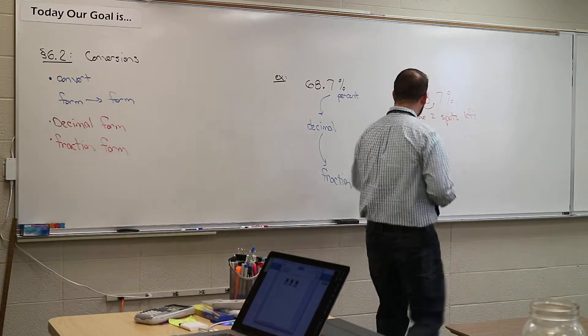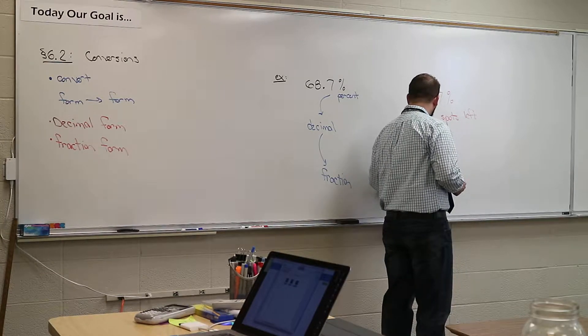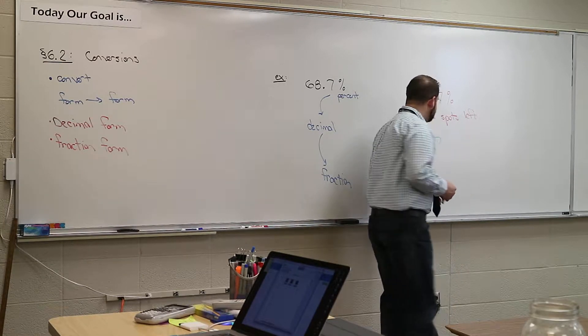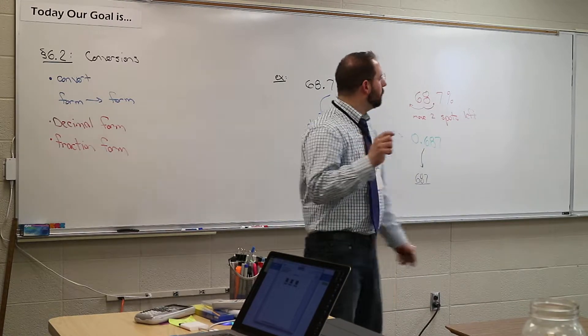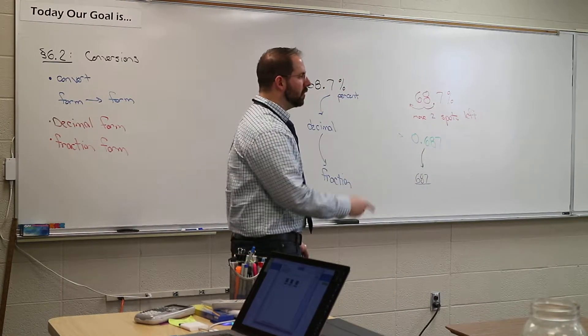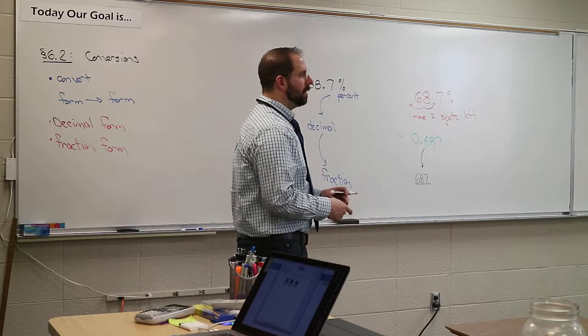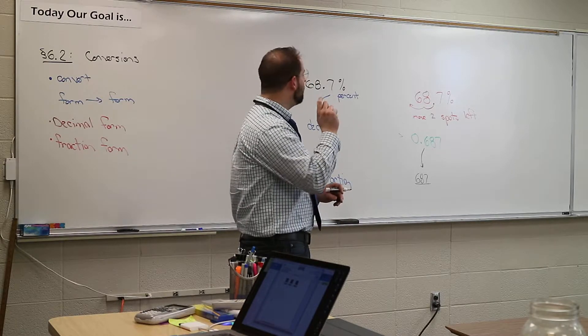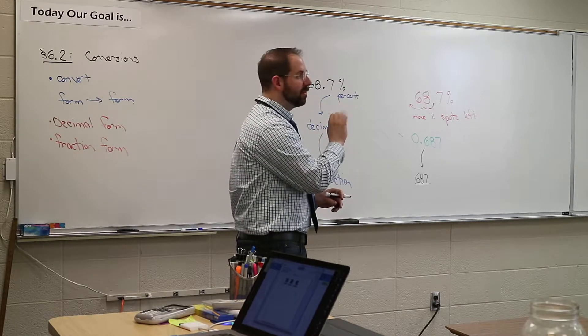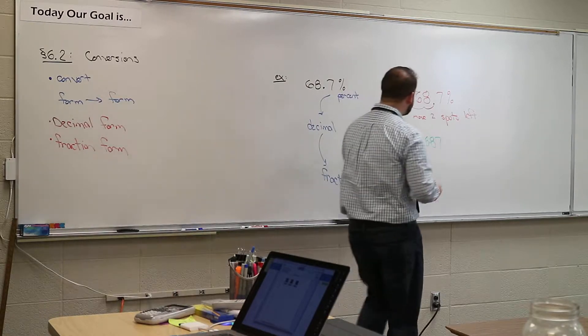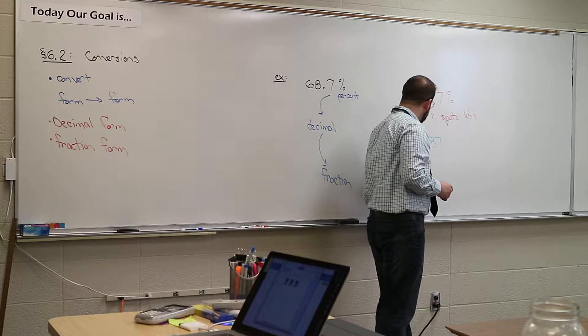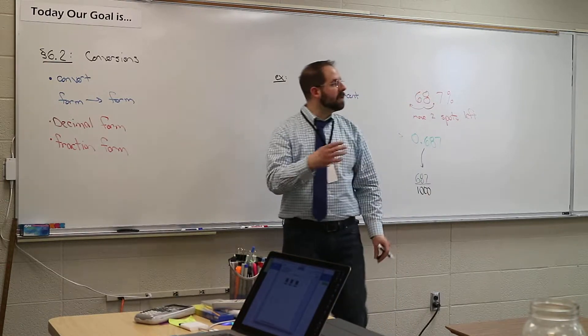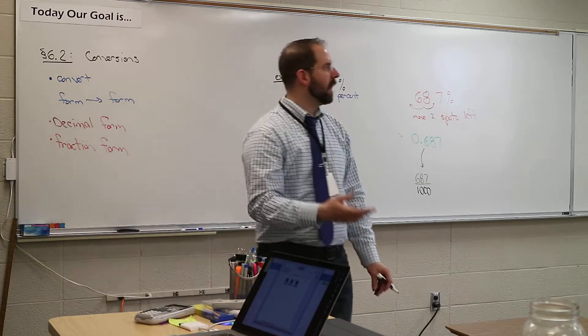How many numbers are behind the decimal on the right side? Three. So we're going to have three numbers. So you're going to put the six, eight, seven. There's three numbers there. Put them on the top. I don't even care if there's zeros. You count all the numbers. And on the bottom, how many zeros go on the bottom? Three. Three. You put three zeros on the bottom. So to make this a fraction, you put one with three zeros on the bottom. That's how you make it a fraction. Yeah, it's a big fraction.